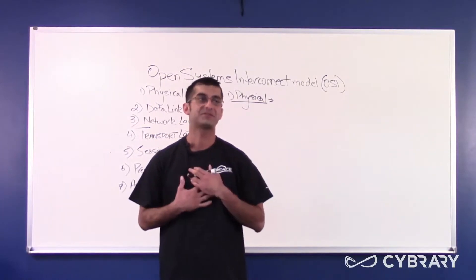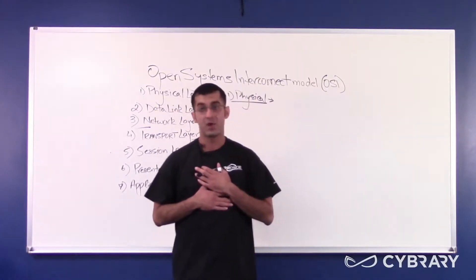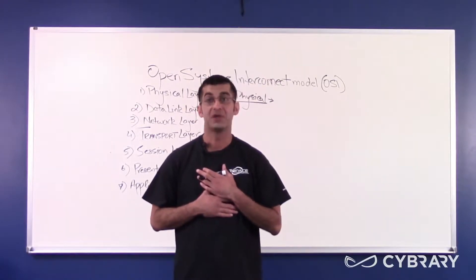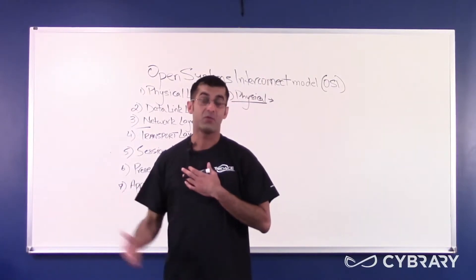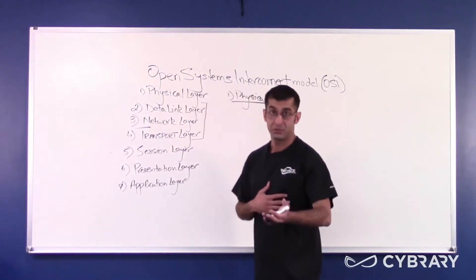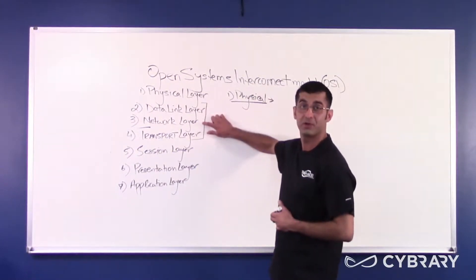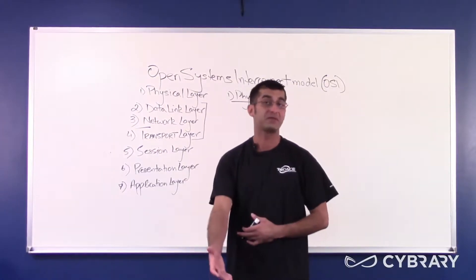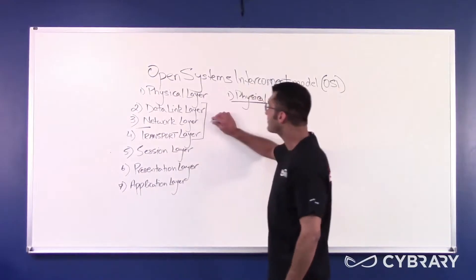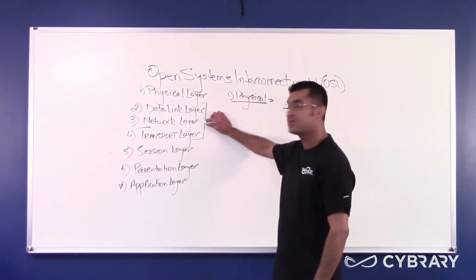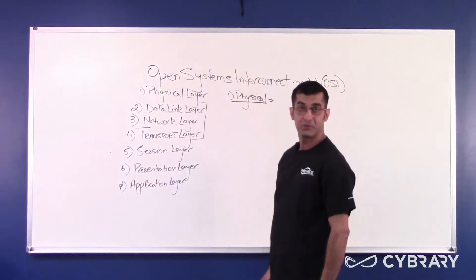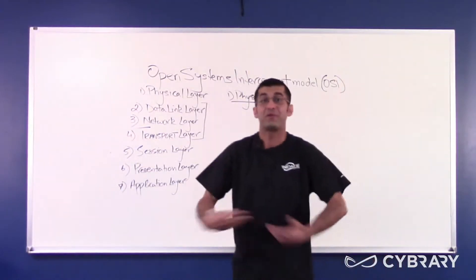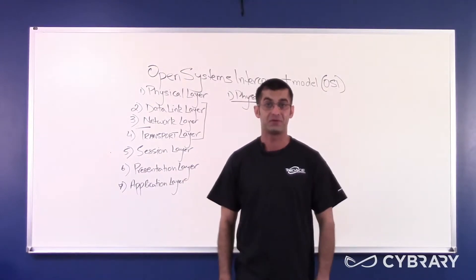Sometimes in classes I get a question — people ask: you said the physical layer deals with devices that you can touch. I can touch a router. When we get to layer three, I will tell you that routers work at the network layer or layer three. And you can touch a router, so why does it not work at the physical layer? When a device works at the physical layer, there's nothing below that layer — it only works at the physical layer.